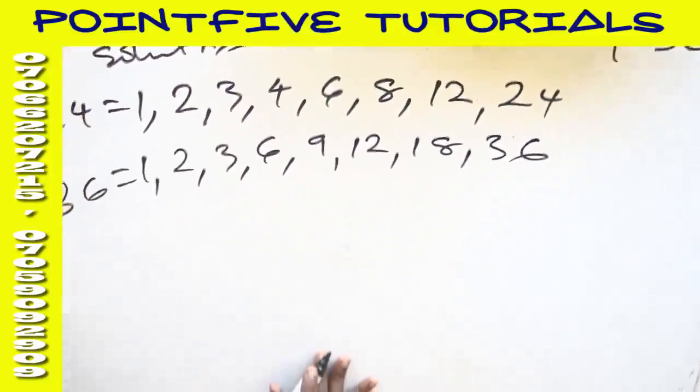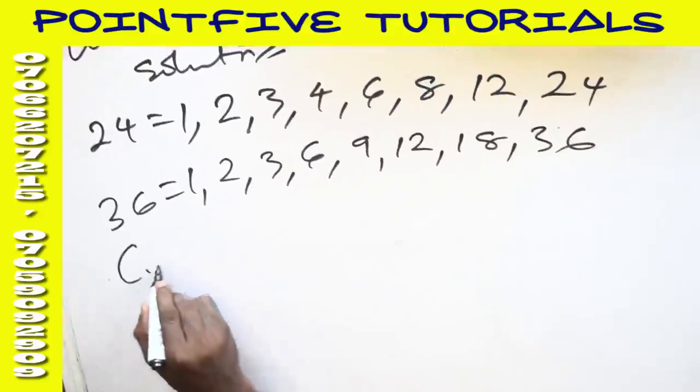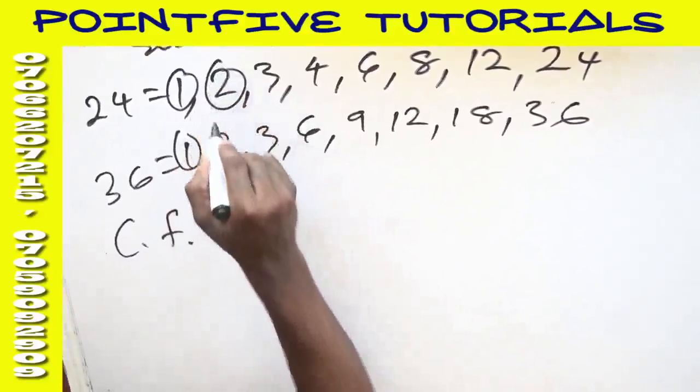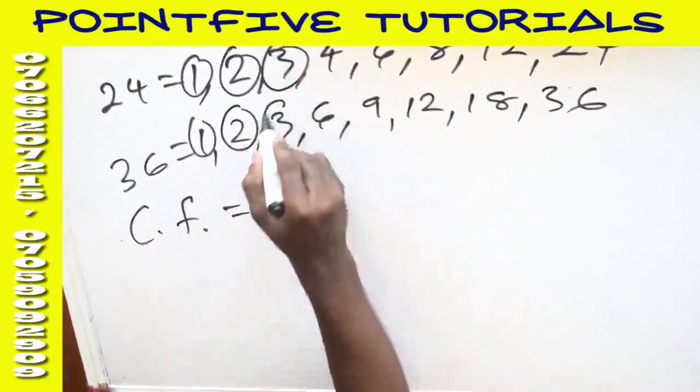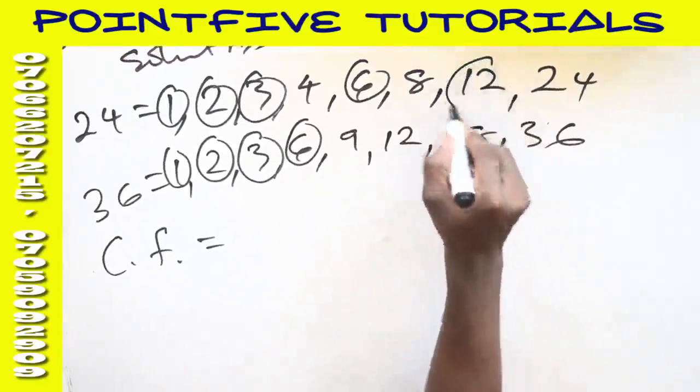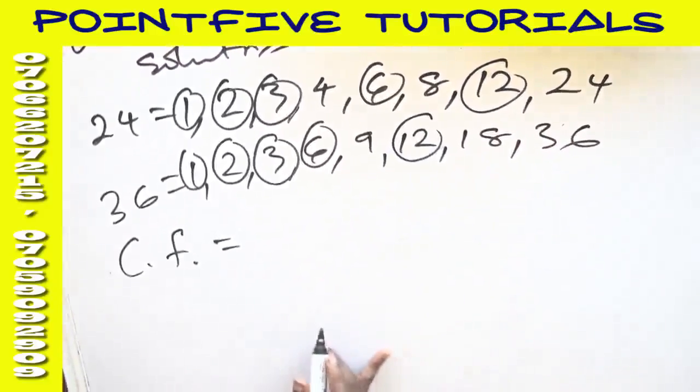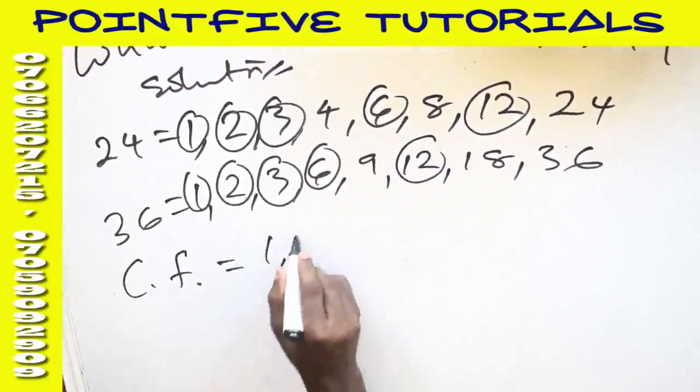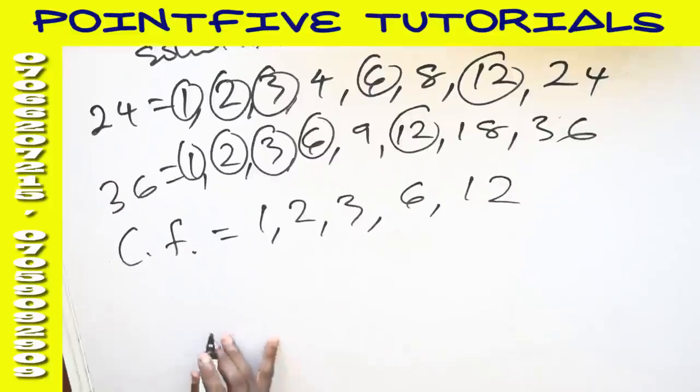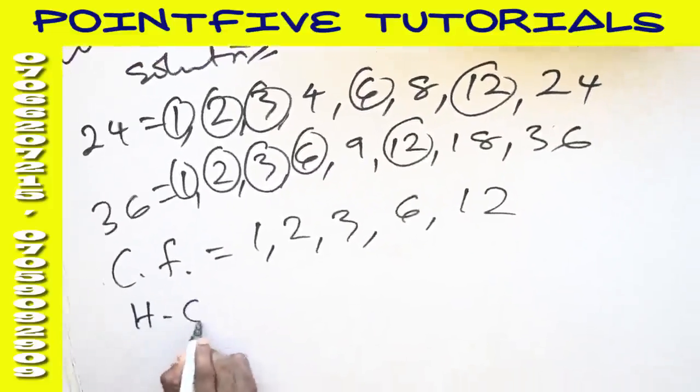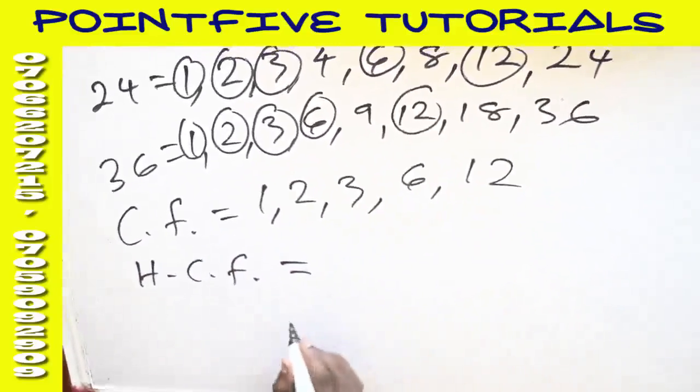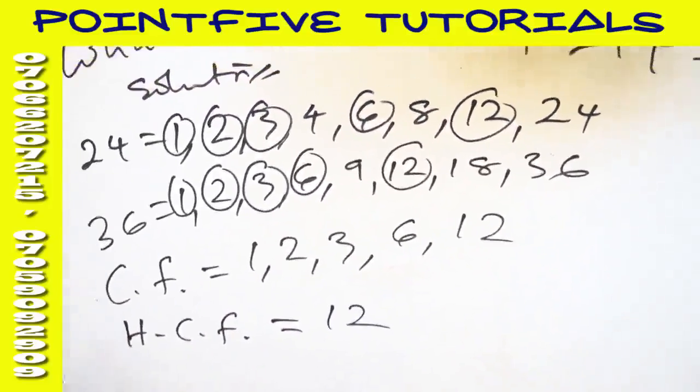Now the common factors, which are perceived, are those numbers that are common on both sides. We write them down: 1, 2, 3, 6, 12. These are the common factors. The HCF is Highest Common Factor. From your common factor, what is the highest number there? It is 12.